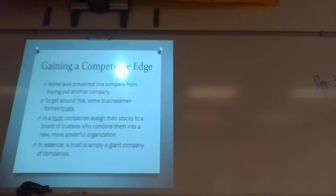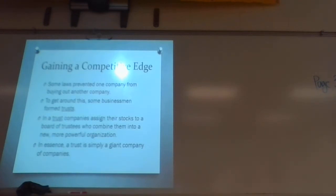What would be a good group of companies to come together to dominate a market? AT&T, Verizon, T-Mobile, Sprint. If AT&T, T-Mobile, and Verizon all came together to dominate the cell phone market, they would be a trust. You can still think you have AT&T, Sprint, or Verizon, but in reality they're all one big company dominating the market.